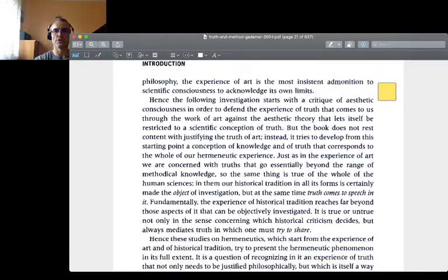Hence the following investigation starts with the critique of aesthetic consciousness in order to defend the experience of truth that comes to us through the work of art against the aesthetic theory that lets itself be restricted to a scientific conception of truth. But the book does not rest content with justifying the truth of art. Instead, it tries to develop from this starting point a conception of knowledge and of truth that corresponds to the whole of our hermeneutic experience. Just as in the experience of art we are concerned with truths that go essentially beyond the range of methodical knowledge, so the same thing is true of the whole of the human sciences.